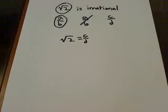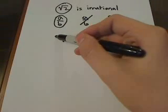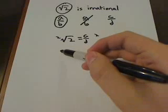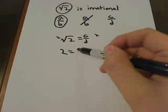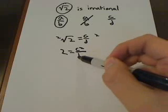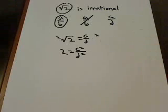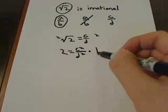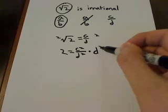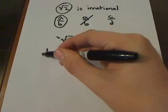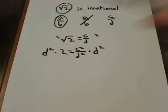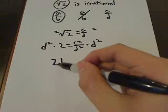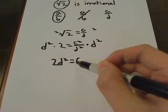An innocent equation, right? Let's square both sides of this. So now, we get 2 equals c squared over d squared. To get rid of this fraction here, let's multiply both sides by d squared. That gives us 2d squared equals c squared.